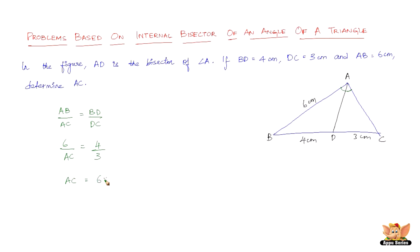Therefore AC equals 6 times 3 over 4 which is nothing but 6 times 3 is 18, 18 over 4 which is 4.5 centimeters. So the length of AC is 4.5 centimeters.